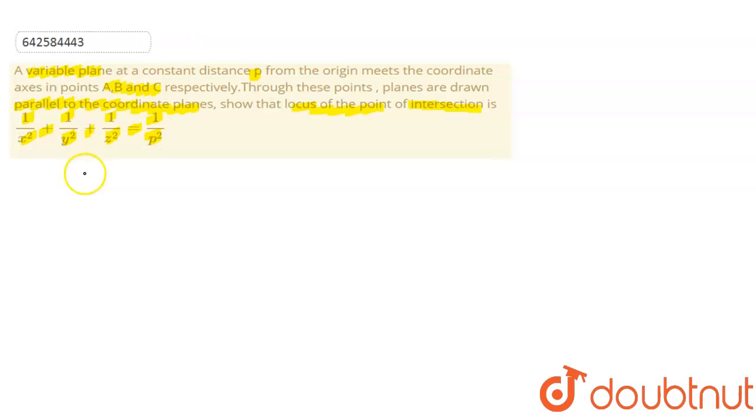So what is the equation of variable plane? It is x by a plus y by b plus z by c is equal to 1.